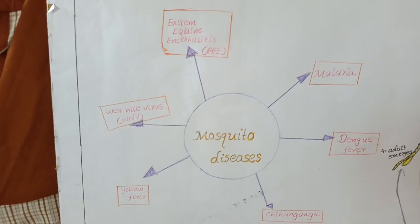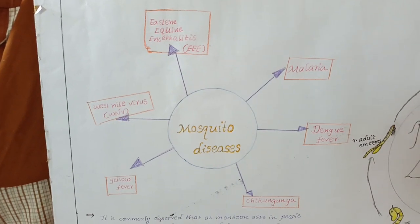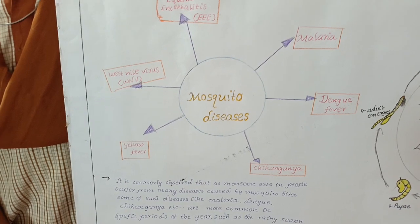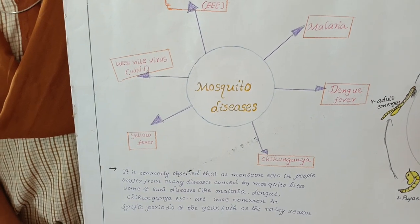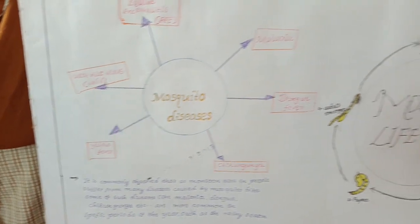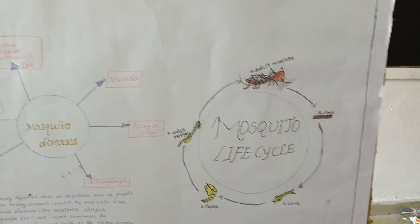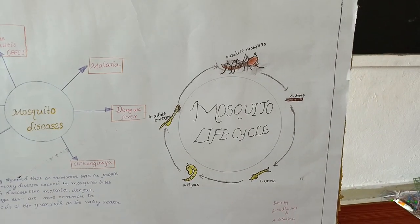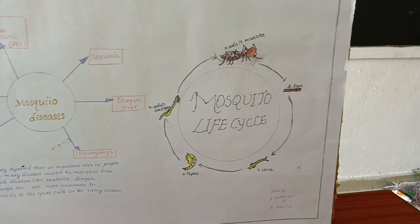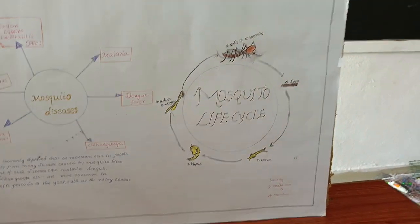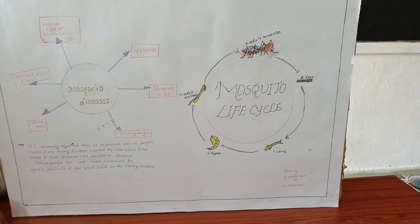First, we know about the mosquito's life cycle. The first stage of the mosquito's life cycle is the adult mosquito. After a few days, it converts into larva.